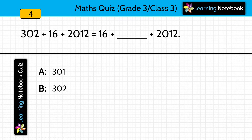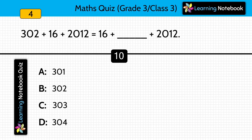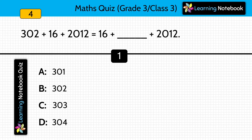Question four: 302 plus 16 plus 2,012 equals 16 plus blank plus 2,012. Which number should come in the blank? Yes, the answer is 302.